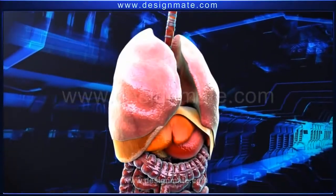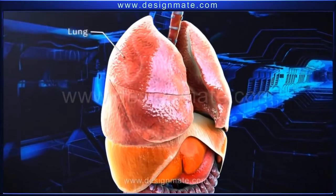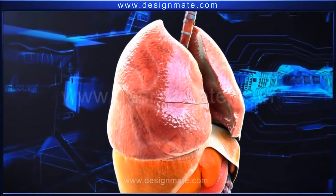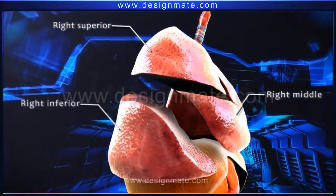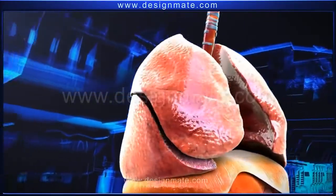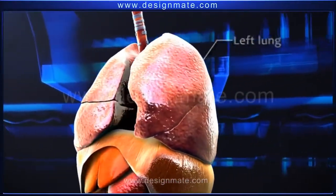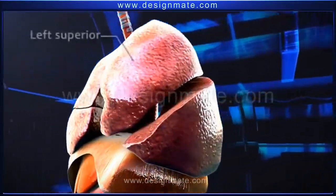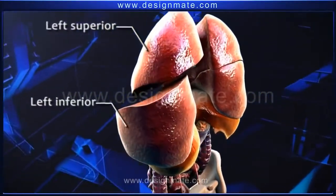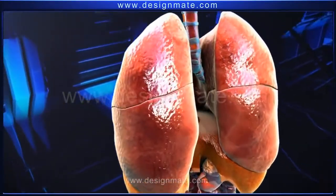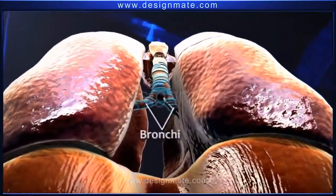Present within the ribcage are the pleural membranes, which enclose the lungs. The right lung is divided into three lobes: the right superior, right middle, and the right inferior lobe. The left lung is smaller and has only two lobes — the left superior and the left inferior lobe.